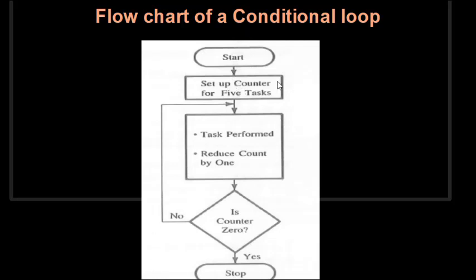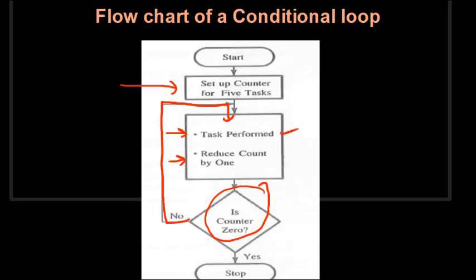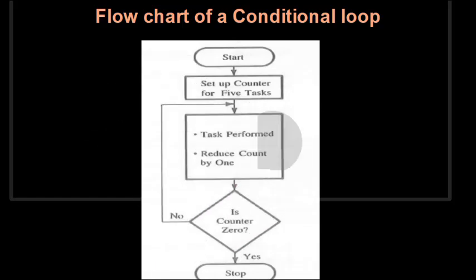Here is a simple flowchart of a conditional loop. Suppose we want to perform a task five times. First, we set up a counter for five tasks, then perform the task and reduce the count by one. Then we check whether the counter is zero or not. If it is not zero, we come back, perform the task again, and reduce the count. This continues until the counter becomes zero, at which point the task has been performed five times.